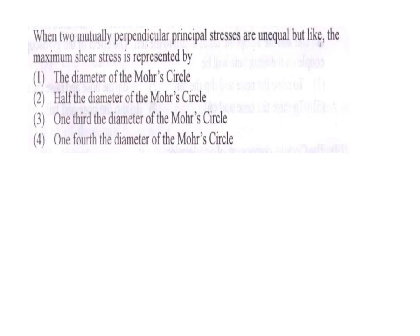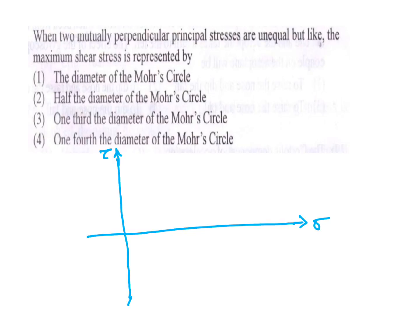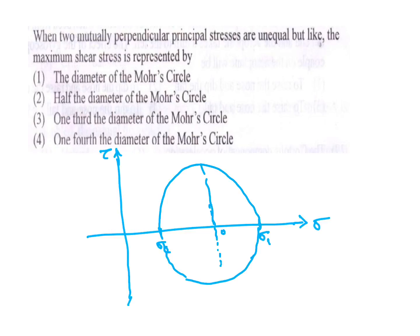When two mutually perpendicular principal stresses are unequal but like (same sign), the maximum shear stress is represented using Mohr's circle. Drawing the circle with both stresses on the positive axis, the maximum shear stress tau_max equals the radius of the Mohr circle, which is half the diameter of the Mohr circle.